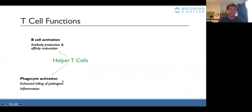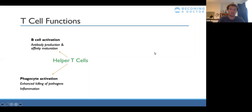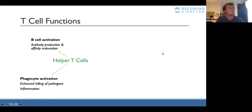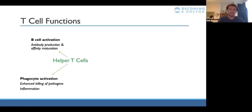Helper T cells also activate phagocytes — phagocytes release cytokines to activate T cells, and T cells in turn release cytokines to activate phagocytes, helping phagocytosis. Regarding affinity maturation versus clonal expansion: clonal expansion is when, after maturation, lots of copies of the cell are made in a massive positive feedback expansion, whereas affinity maturation is the process of the cell becoming activated in the first place.